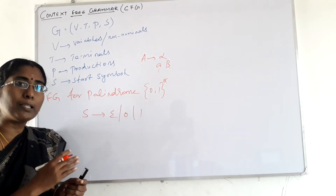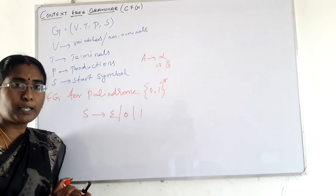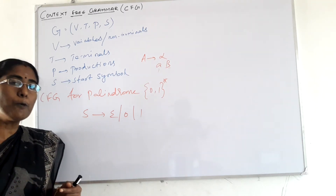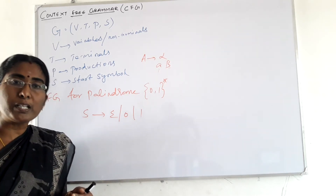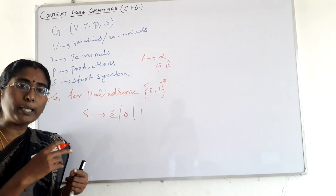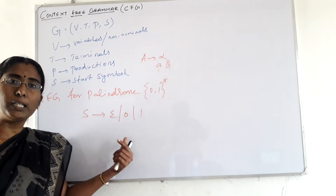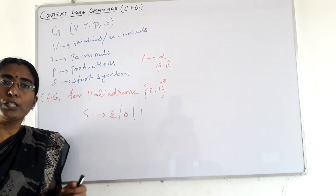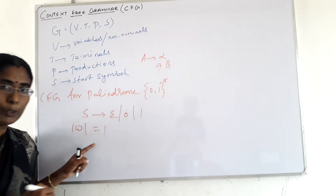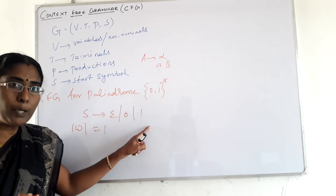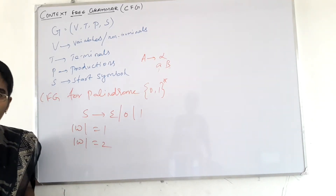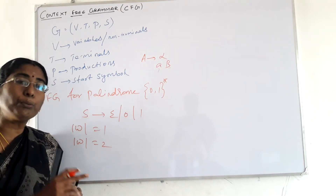Next, we need to generate n number of symbols for the palindrome condition. We have to write productions that generate symbols in a recursive manner — it is not possible to write a production for each and every string. We have to recursively generate strings using these productions. For length |w| = 2, the palindrome condition requires that the string equals its reverse.